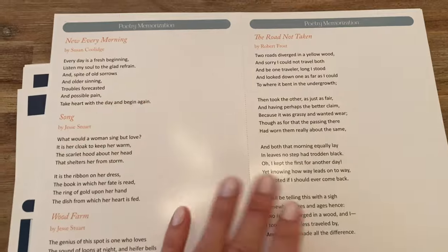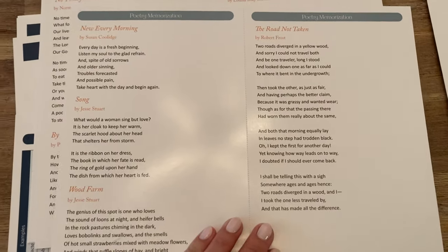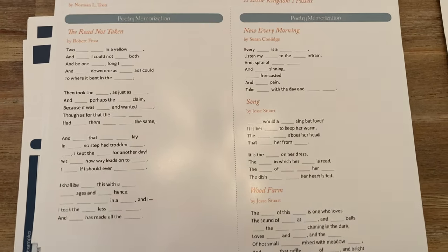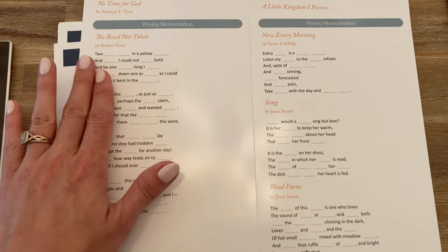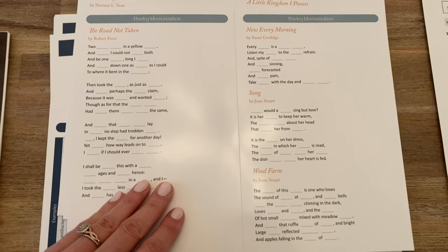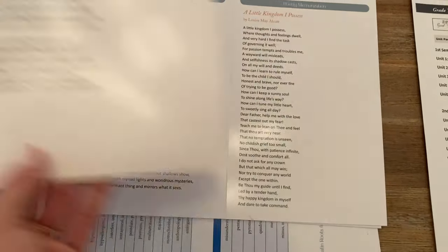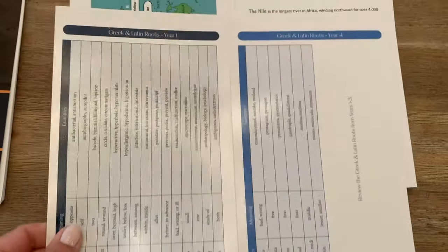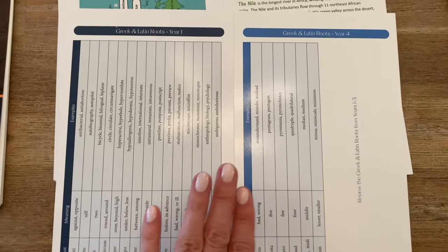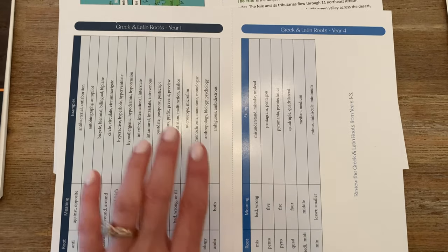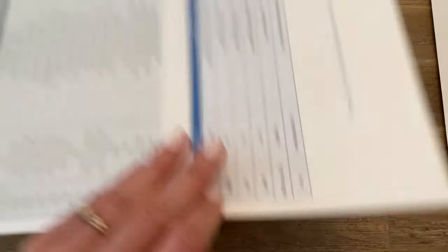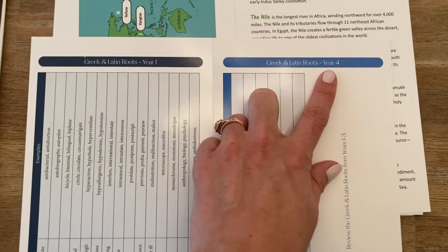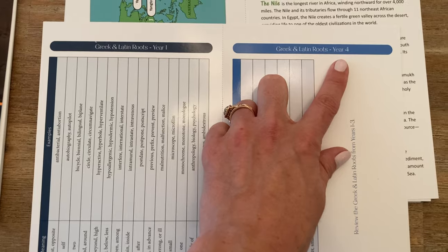These are the poetry memorization cards. You have the poems themselves on one side, and on the other side it's kind of like a fill-in-the-blank — it gives you some of the words and then has your brain fill in the ones that are missing. This little sheet, which is perforated so it needs to be separated, has all of the Greek and Latin root words for years one, two, and three. It does include year four, which The Good and the Beautiful is not coming out with — they're supposed to be coming out with some half-year courses but have not released them yet, so that one you'd just put aside.